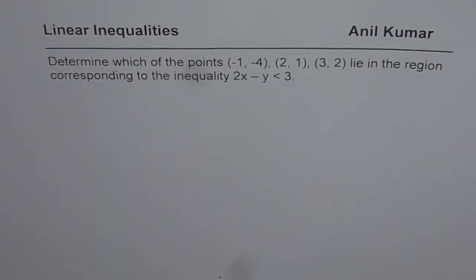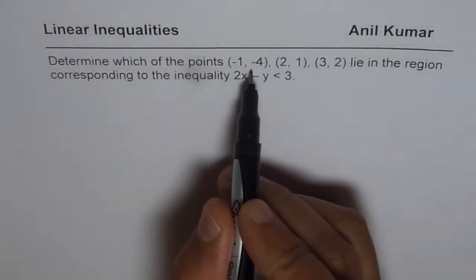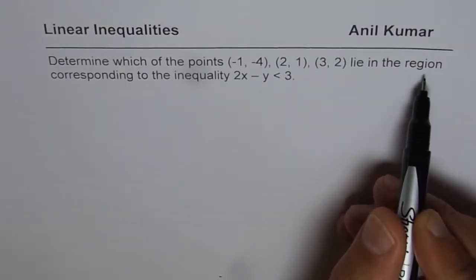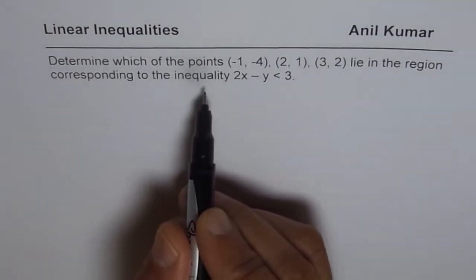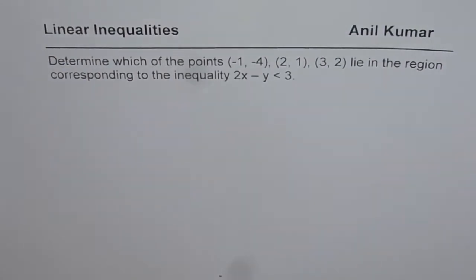I am Anil Kumar and here is a very interesting question on linear inequalities. We have very few questions like this in our set of videos. The question here is: determine which of the points (-1, -4), (2, 1), (3, 2) lie in the region corresponding to the inequality 2x - y < 3.